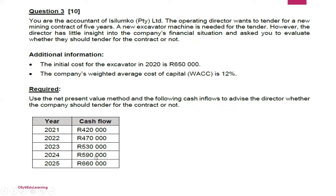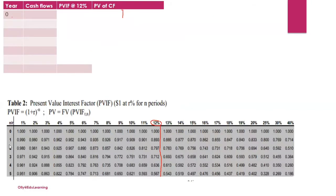The different cash flows are given for years 2021, 2022, 2023, 2024, and 2025 — that is five years. You have to use the NPV method to determine whether it's worth tendering for this contract. The first thing to do is draw your table. The table makes it easier to calculate; it doesn't need to be elaborate, but it helps keep things organized.